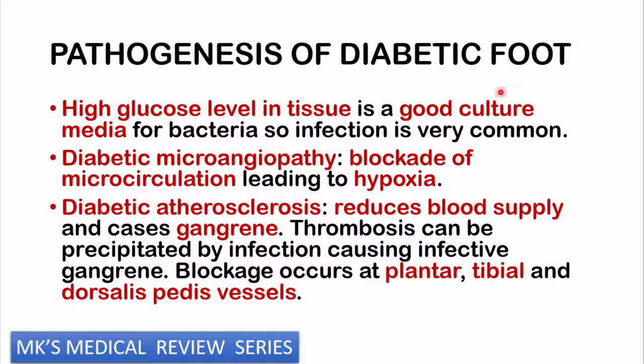There is also diabetic atherosclerosis — deposition of fats and associated substances in the walls of blood vessels, leading to arterial thickening and reduced blood supply. This may lead to gangrene, and there may be thrombosis precipitated by infection causing infective gangrene. The mostly affected blood vessels include the plantar, tibial, and dorsalis pedis vessels. You should palpate these on physical examination and check their patency on Doppler investigations.